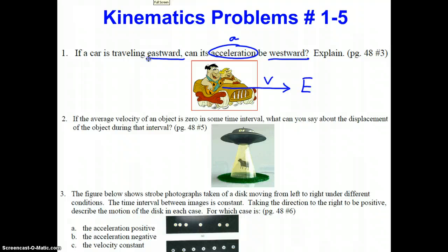Their acceleration can be westward if they're slowing down. If they're slowing down, their velocity would still be in an eastward direction. But in order for them to slow down, there would have to be some force acting on the car to slow it down. We're getting a little bit ahead of ourselves as far as units are concerned, but no harm there.